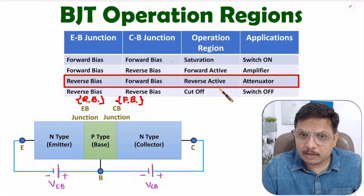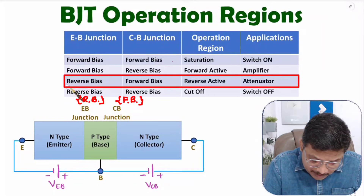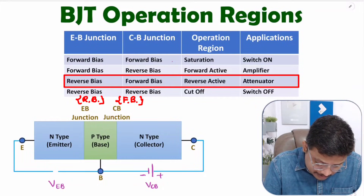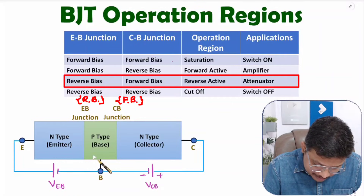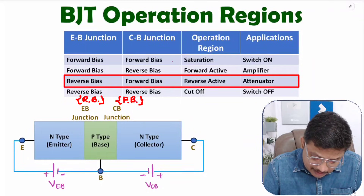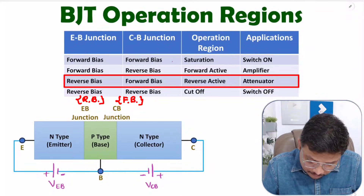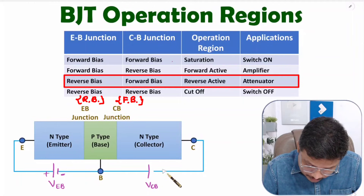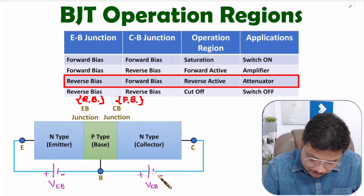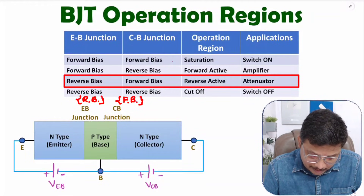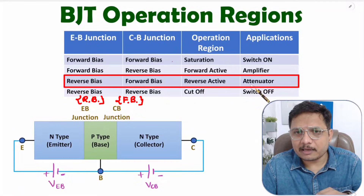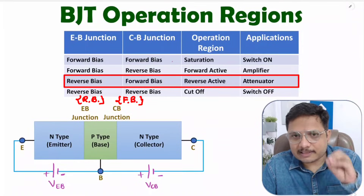If you want to use reverse active mode, you keep the emitter-base junction in reverse bias and the collector-base junction in forward bias. To keep the emitter-base junction in reverse bias, the N type is connected with the positive terminal and the P type with the negative terminal of the battery. For the collector-base junction in forward bias, the P type is connected with the positive terminal and the N type with the negative terminal. That is how we can have the attenuator application of BJT, though we don't typically use it.